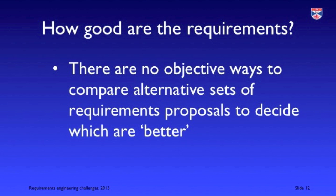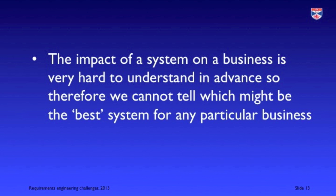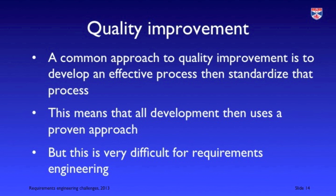Another problem is that once we've developed a set of requirements, we don't have any objective way of saying how good these are. We can't measure them. We don't know if one set of requirements is better or worse than another. As a consequence, we can't measure or assess the impact of a system on a business, so we can't tell which set of requirements is best for that business. The way we improve quality in many domains is to have repeatable processes — we learn from experience what good processes lead to high product quality, and we replicate these processes, sometimes embedding that experience in standards so that by following them we can be reasonably confident we are adopting a good process.